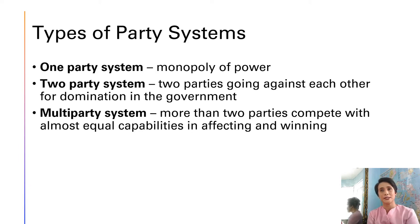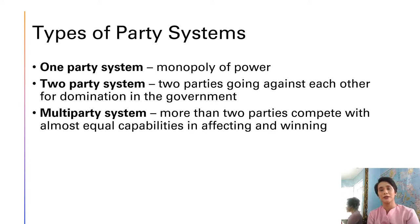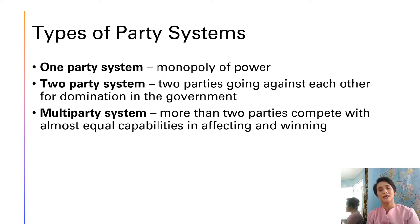The next type is the two-party system, in which two parties go against each other for domination or majority rule in the government. The best example would be the United States of America, which has two major parties: the Republicans and the Democrats. It is only with these two parties that the people choose their president. Of course, other parties exist in the United States, but the best way to secure a seat in government is by being a member of either of these two parties.